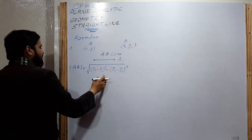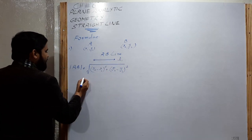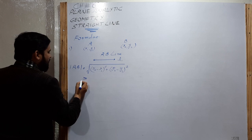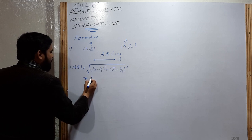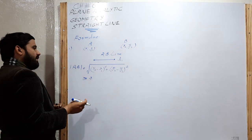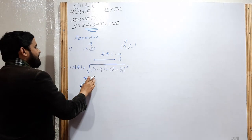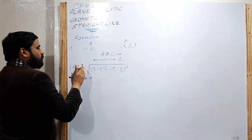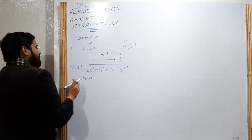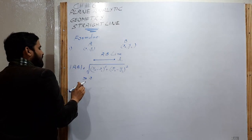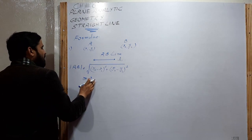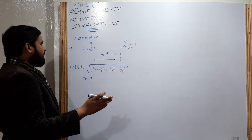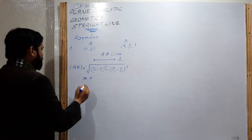The distance is always greater than or equal to zero. If the points coincide, then the distance between the two points is zero; otherwise, the distance is always greater than zero.